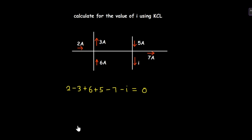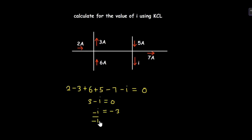Summing this side: 2 minus 3 is minus 1, plus 6 gives 5, plus 5 gives 10, minus 7 gives 3. So we have 3 minus i equals zero, making i equal to 3 amperes. Since we got a positive answer, current i is actually a positive current. The arrow was shown pointing away from the node, but the positive result means we would redraw it pointing towards the node.